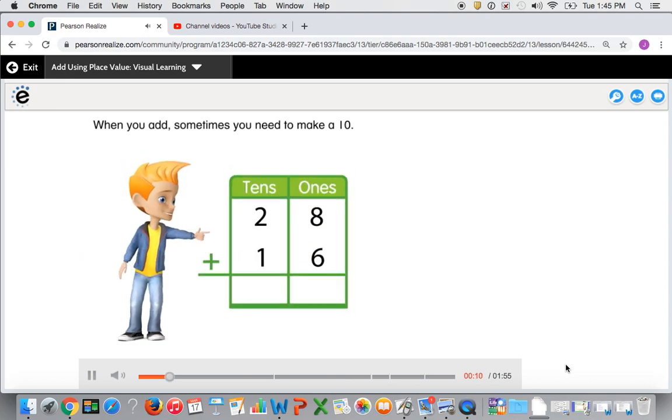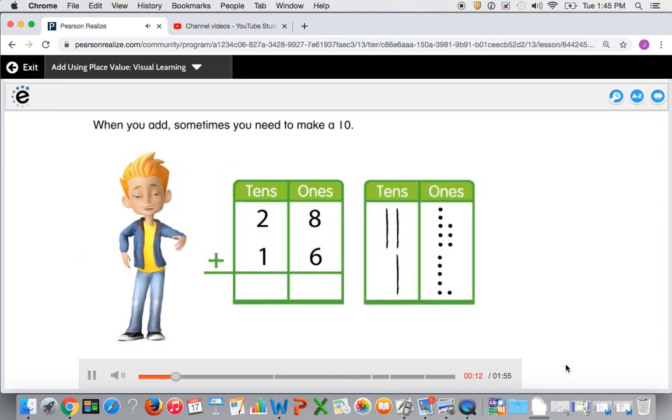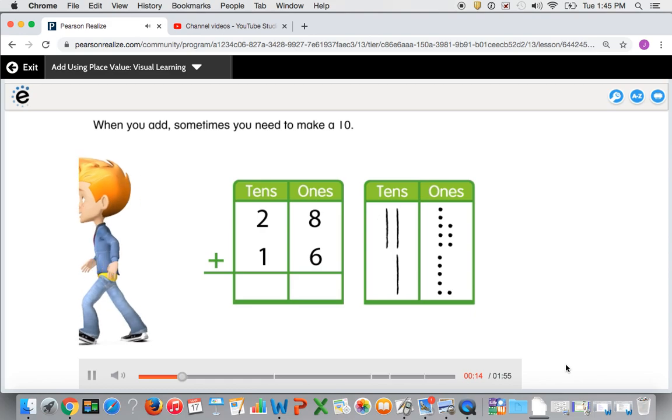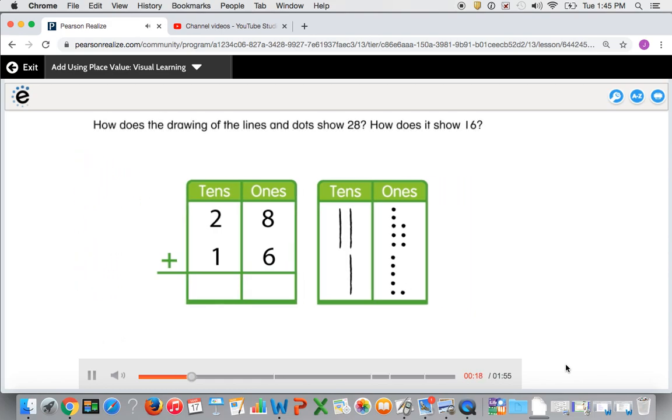When you add, sometimes you need to make a 10. How does the drawing of the lines and dots show 28? How does it show 16?